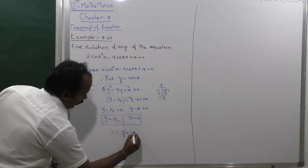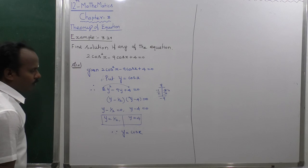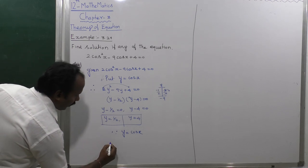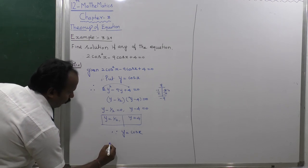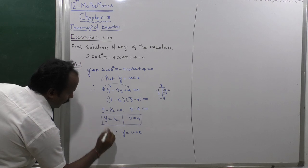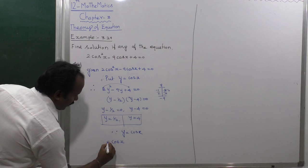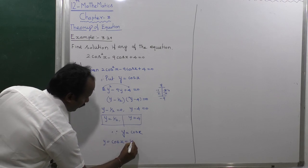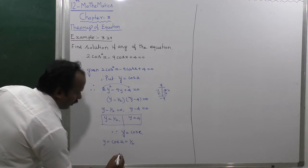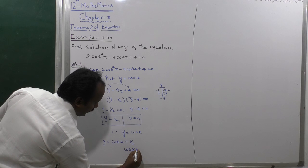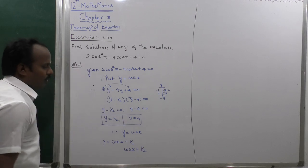Since y = cosx, replace the values: cosx = 1/2, and cosx = 4.